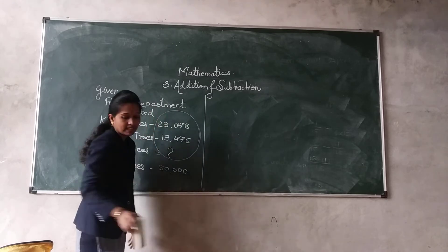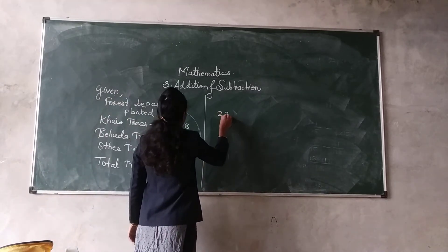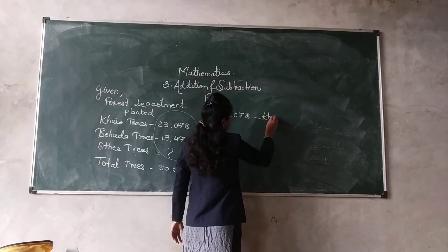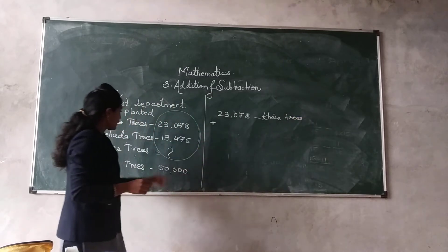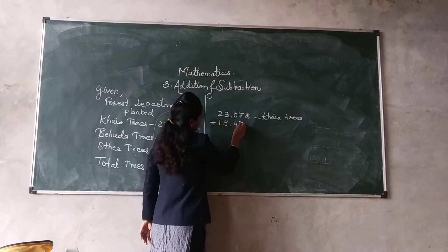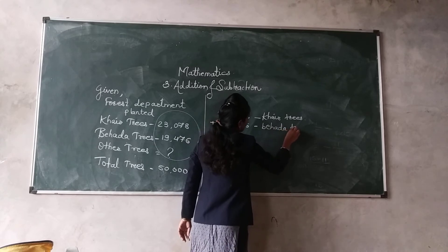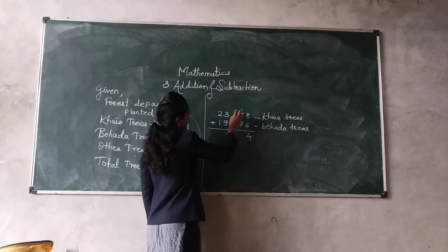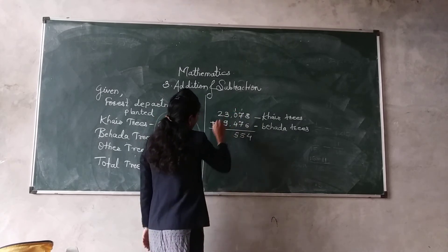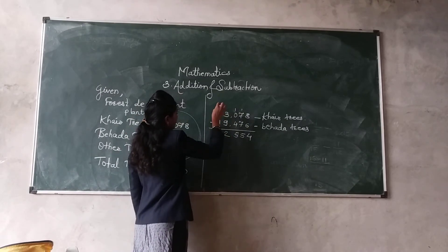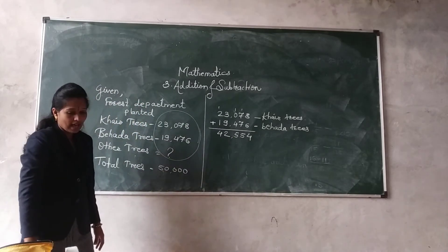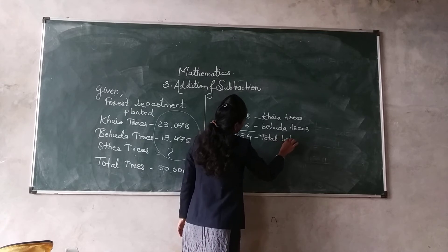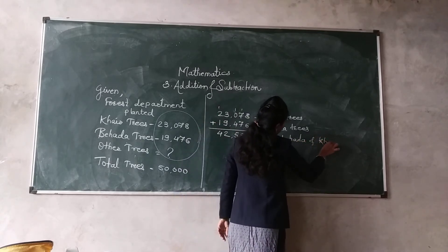So pay attention — addition and subtraction, both operations we have to do. First, write down 23,078 — those are Khair trees. Plus the next number, 19,476 — those are Behera trees. Now add the numbers: 8 plus 6 is 14, write 4 carry 1; 7 plus 7 is 14, plus 1 is 15, write 5 carry 1; 4 plus 1 is 5; 9 plus 3 is 12, write 2 carry 1; 2 plus 1 is 3, plus 1 is 4. So the answer is 43,554. These are the total Behera and Khair trees combined.